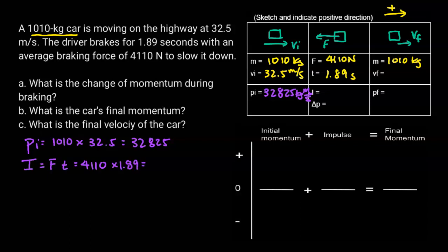Force is 4,110 times 1.89, and I get 7,768. Now because I have my sketch, I know that this should be a negative number. So my impulse is going to be negative.